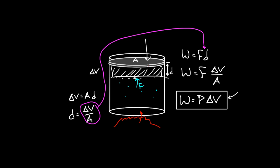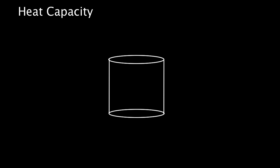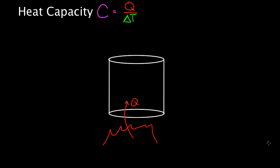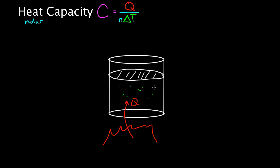Now we're ready to talk about heat capacity. Heat capacity is defined as: given a certain amount of heat added to your gas, how much does the temperature increase? Capital C is heat capacity, defined as the amount of heat added divided by the change in temperature. The molar heat capacity divides by an extra N (number of moles), so it's Q over N·ΔT. If we have a piston, we must ask: do we allow the piston to move while adding heat or not? Because of that, there are different heat capacities.